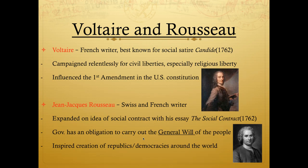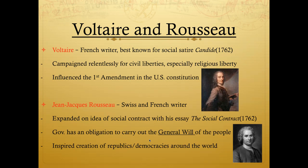Jean-Jacques Rousseau also adds to ideas of natural rights and civil liberties. He writes on the social contract and says the government has an obligation to carry out the general will of the people. If a monarch drifts away from what the people want, the government isn't fulfilling its obligation. He expands on Locke's idea that if a government becomes oppressive, it must be dealt with and eradicated. The government needs to listen to the general will of its people.